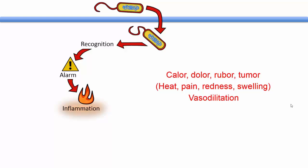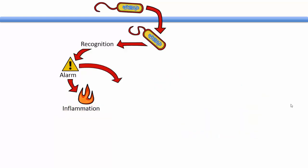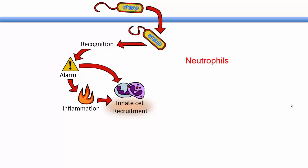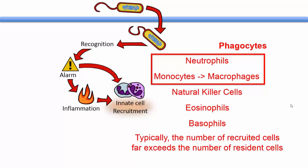These symptoms are caused by vasodilation, increased permeability, extravasation of white blood cells, and stimulation of pain receptors. The presence of alarm signals along with tissue inflammation stimulates the recruitment of additional innate immune cells from the circulation. These include neutrophils and monocytes, which become macrophages — the major phagocytic populations. Other recruited cells include natural killer cells, eosinophils, and basophils, resulting in a marked increase in the number of innate immune cells in the inflamed tissues.